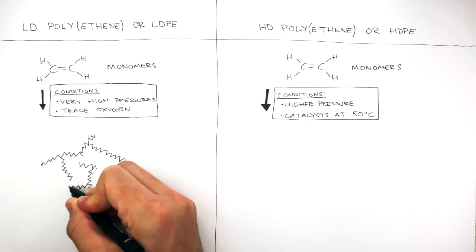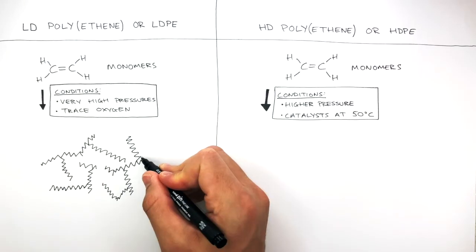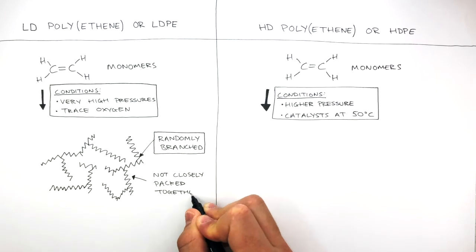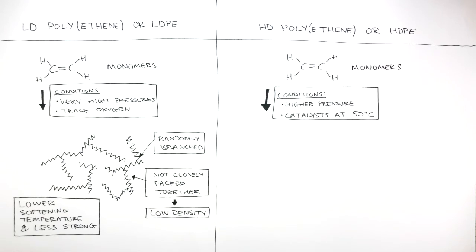In low-density polyethene, the zigzaggy lines represent the polymer chains, and these polymer chains are randomly branched and are not packed closely together. So the polymer chains in a low-density polyethene are randomly branched and not closely packed together, causing this polyethene to have a low density, which is why we call it a low-density polyethene. Not only this, low-density polyethenes have a lower softening temperature and are less strong compared to high-density polyethenes.